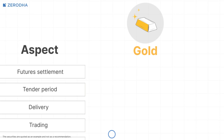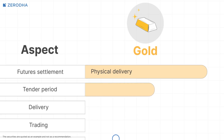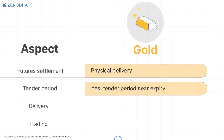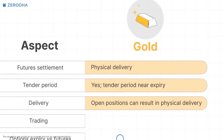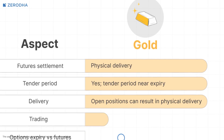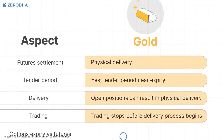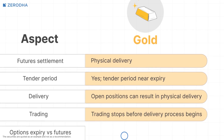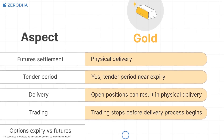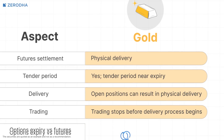Take Gold and Crude Oil. Gold futures are physically settled. As the contract nears expiry, it enters a tender period, which means any position can result in physical delivery. To prevent this, trading in gold futures is stopped before the delivery process begins.